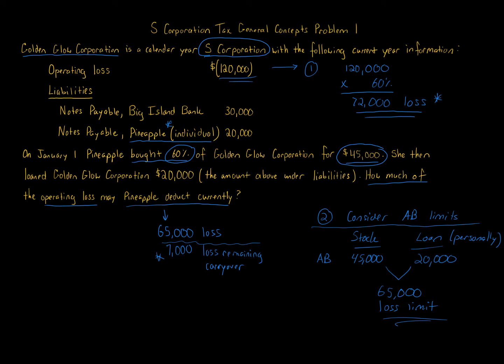As a partnership, we combine both liabilities regardless of who the note payable is to — Pineapple, Papaya, it doesn't matter. We take 60% of the $50,000 total liabilities, which is $30,000, add that to the $45,000, and get $75,000, which covers the full $72,000 loss.